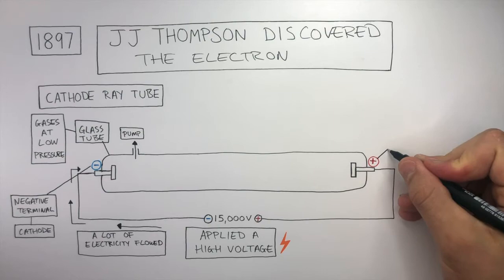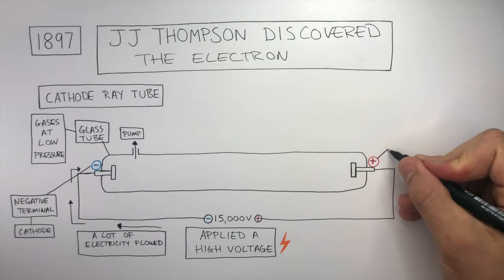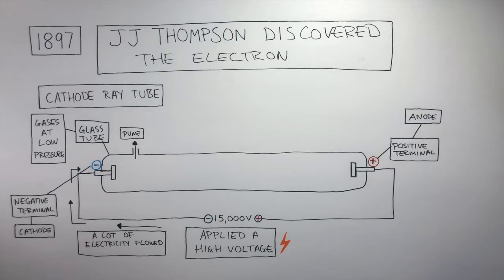On the opposite side of the glass tube, where you see the positive sign, this is the positive terminal, known as the anode. So 15,000 volts of electricity flows through the wire from the power source. This reaches the cathode.